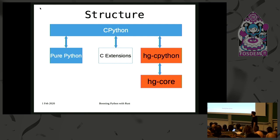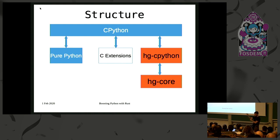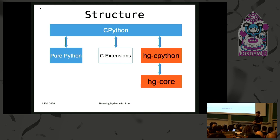We have the following structure within Mercurial — I'm only talking about CPython now, so for people using PyPy, I'm sorry. The pure Python code talks to its backend, CPython. The C extensions do the same thing. And Rust is split into two crates: the first being hgcore, which is a standalone library that has no idea whatsoever that it's talking to Python, and hgcpython, which glues hgcore to a Python executor.